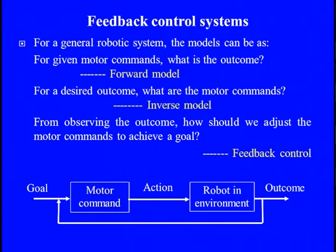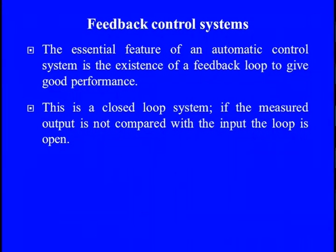Based on that, we can frame a basic model of the feedback control system: we have the goal given to the motor command, there is a process happening with the motor, and the action is taken towards the robot in the environment. The command is given to the robot, which gives some activity as the outcome. If there is a difference between the outcome and the goal — that is the error — this error is given as input to actuate the motor, amplified and given as action to the robotic feature, just to achieve the real goal. The essential feature in any feedback control system is the existence of a feedback loop to give good performance.